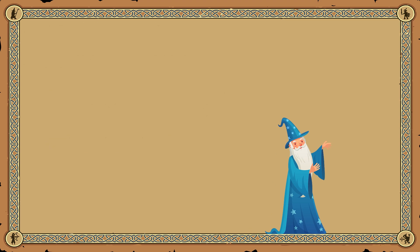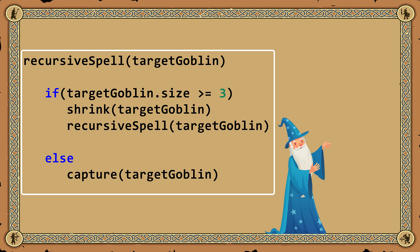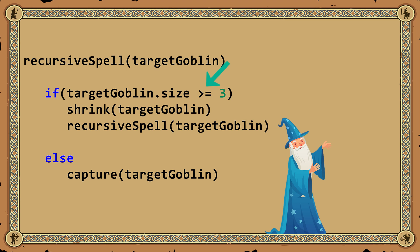But the pinnacle of magical prowess was achieved with the discovery of recursion. Allow me to explain how it works. A different helper spell is crafted, containing a recursive case and a base case. When the goblin is too large, the recursive case casts the shrink spell, and then casts itself again. Recursive spells shrink the problem — in this case literally — and then conjure themselves again. This continues until the goblin is no longer too large. At that point, the problem is trivial, and the base case triggers, casting the capture spell and ending the recursion.